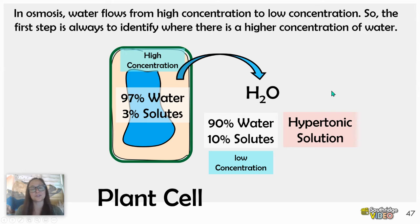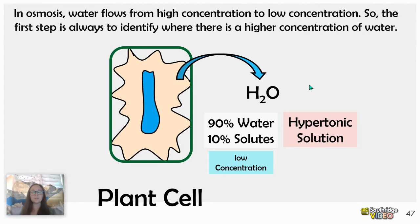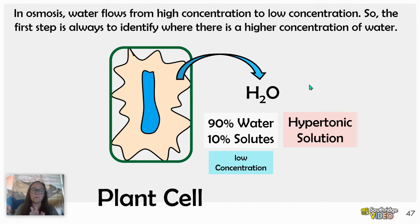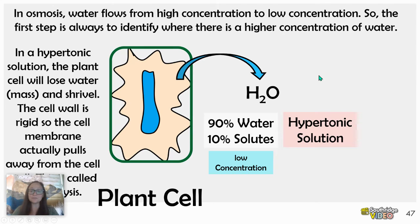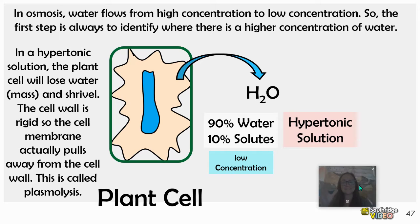Here's where plant cells are kind of cool. As the water leaves the plant cell, the cell wall made of cellulose is still there, but the cell membrane actually pulls away from the cell wall as the cell loses mass. As water flows out by osmosis, the cell loses mass and even the central vacuole becomes smaller. This plant cell shrinking is called plasmolysis.